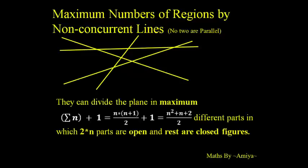If there are n lines, then they can divide the plane into a maximum of σn + 1 parts, where σn = n(n+1)/2. The final value is (n² + n + 2)/2 different parts, in which 2n parts are open and the rest are closed. Please remember: open regions are always double the number of lines.